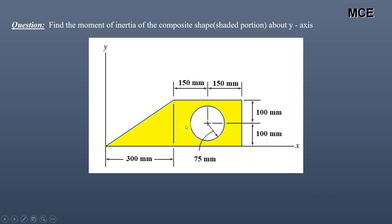If you want to learn how to find the moment of inertia of this composite shape about the x-axis, you can click on the link provided at the top of this video. So this is a composite shape, and we have to find the moment of inertia of the shaded portion only, because from this shape the circular portion has been cut out, and we have to find the moment of inertia of the remaining shaded shape.